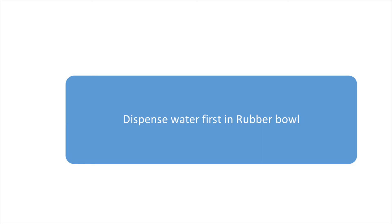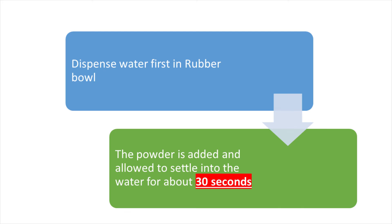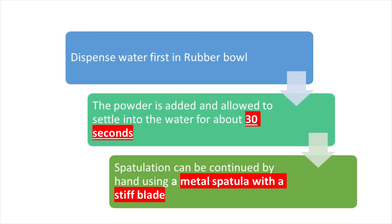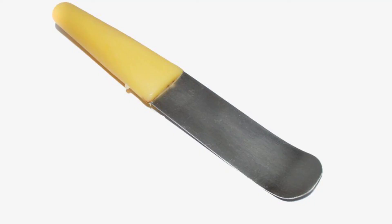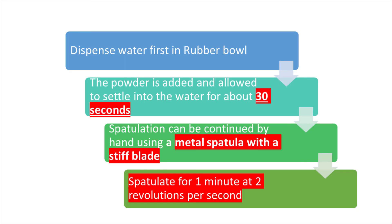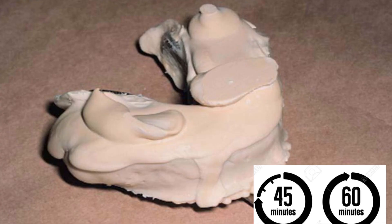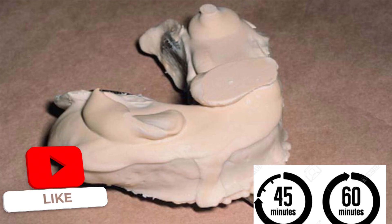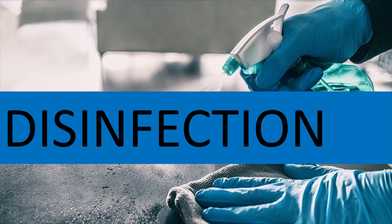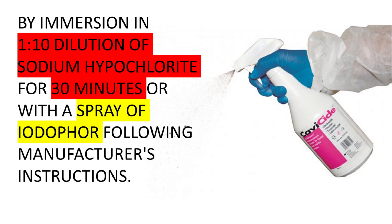For manipulation, always dispense water first in the rubber bowl before adding the powder. Once the powder is added, allow it to settle for 30 seconds, then use a stiff metal spatula to mix for at least one minute at two revolutions per second. When pouring the impression, use a vibrator to prevent air entrapment. Wait 45 to 60 minutes before separating the cast from the impression. For disinfection of models, use a 1:10 dilution of sodium hypochlorite for 30 minutes or spray with iodophor as per the manufacturer's direction.